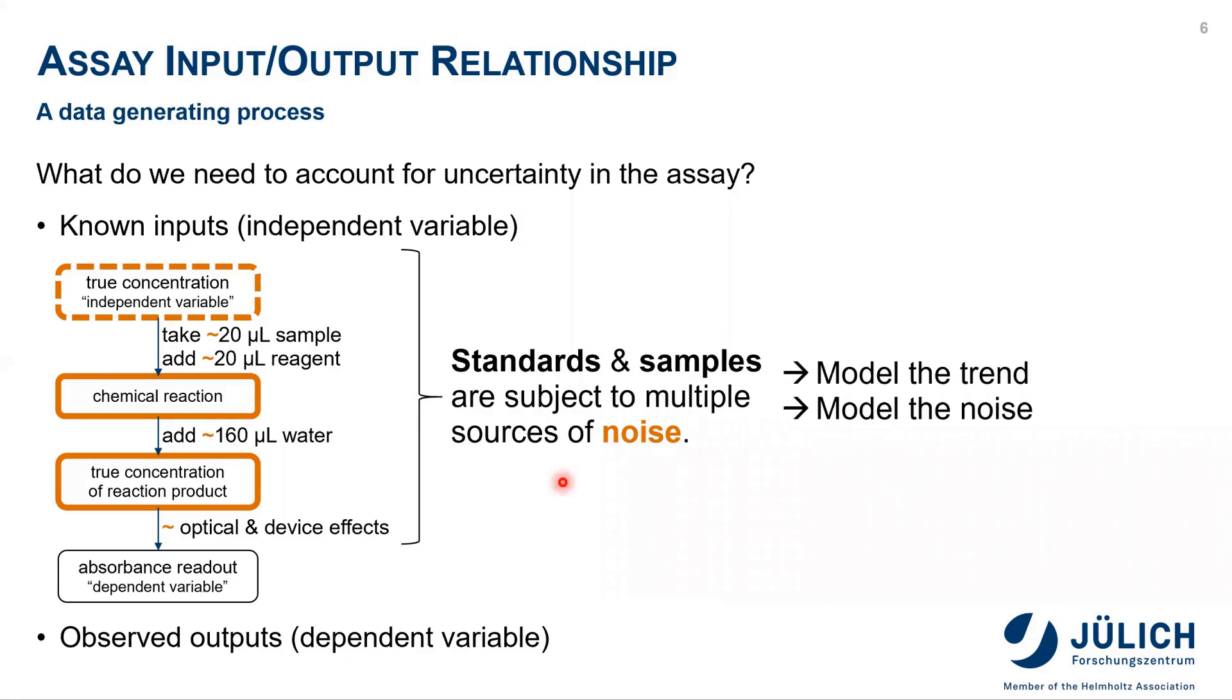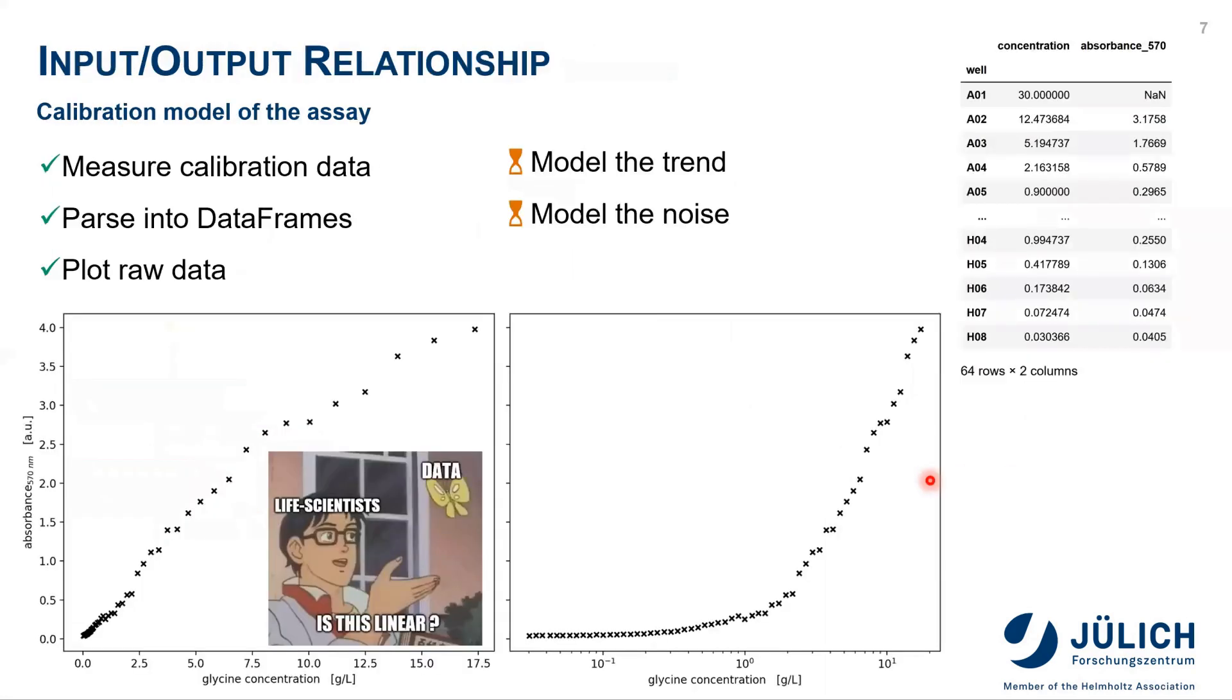What we have to take into account now that we've seen the data generating process is that either if we do it with known standards or with our samples, those measurements and the whole process is subject to multiple sources of noise. For example, this could be error prone pipetting of volumes or the device itself could have different errors. What we need now is not only a simple calibration, but we should come up with a model that describes the trend between input and output, but also we should model the noise.